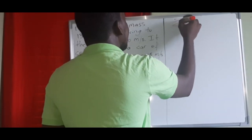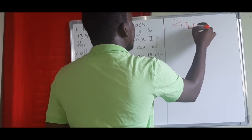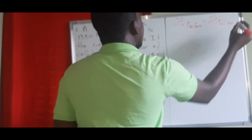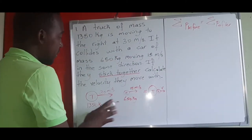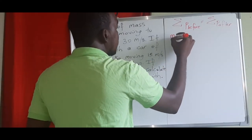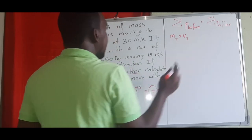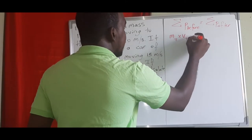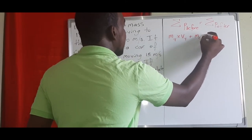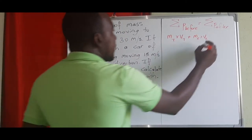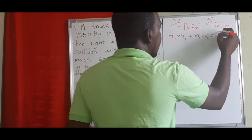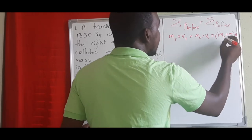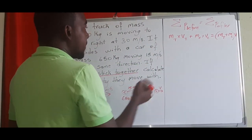The first thing we write is that the sum of momentum before equals the sum of momentum after. Before the collision, we had two separate objects, so it's the mass of the truck times the velocity of the truck — positive because it's going to the right — plus the mass of the car times the velocity of the car, also going to the right. After, since they stick together, we add the mass of the truck and the mass of the car, multiplied by the common velocity v.